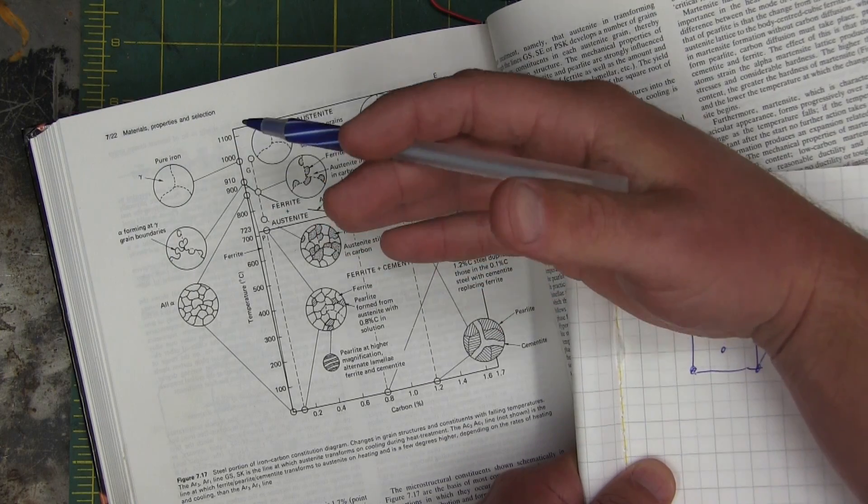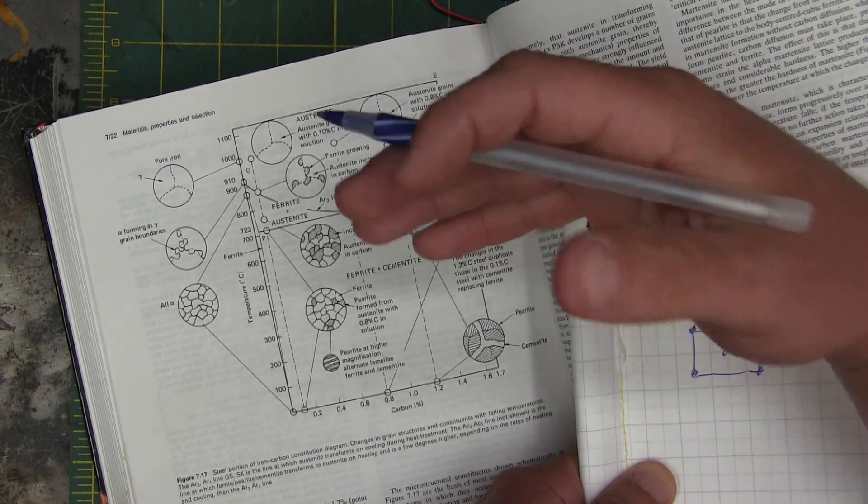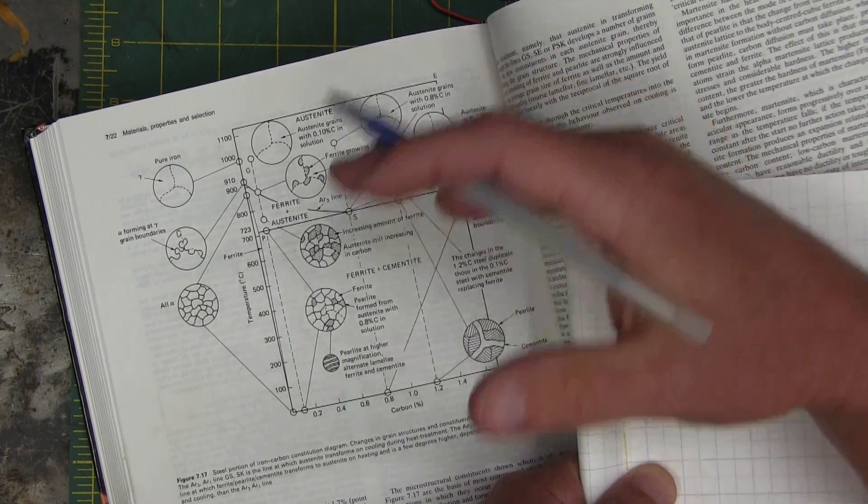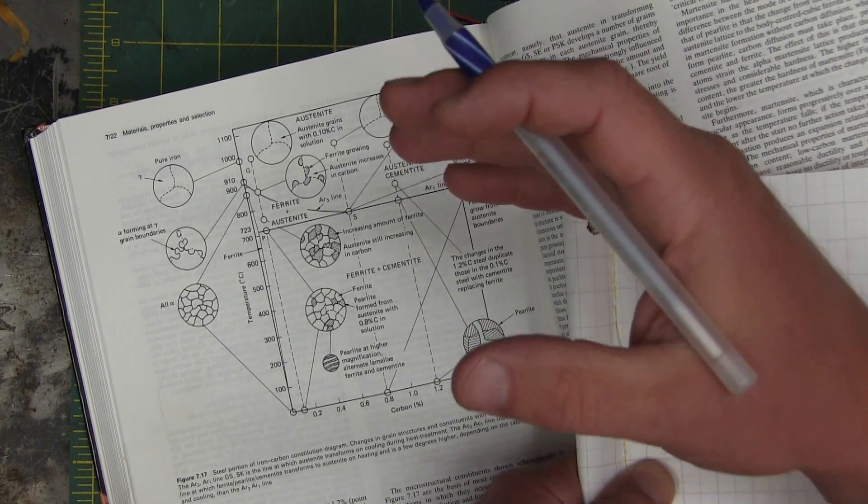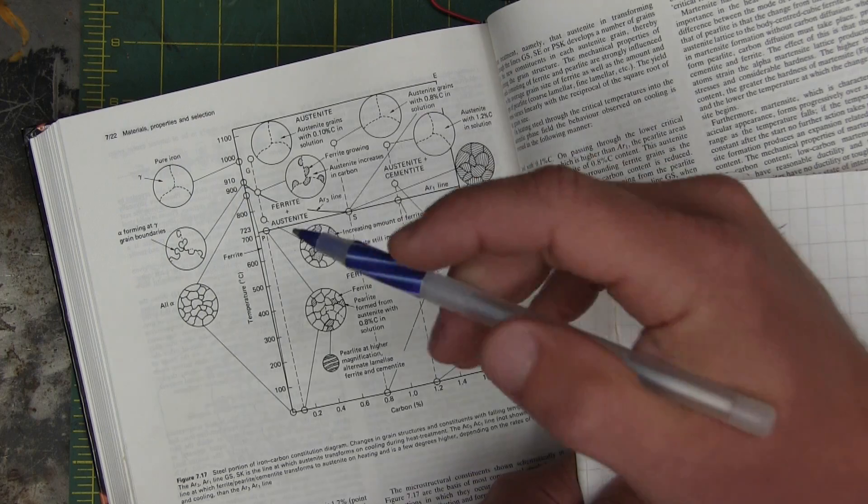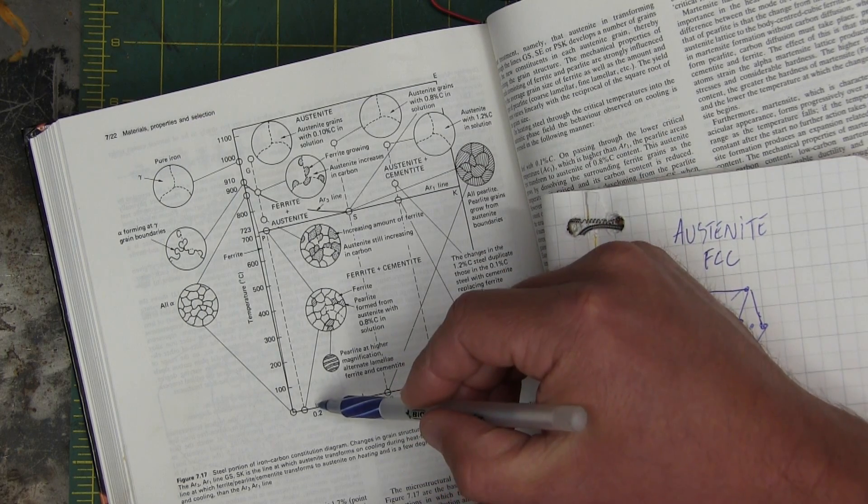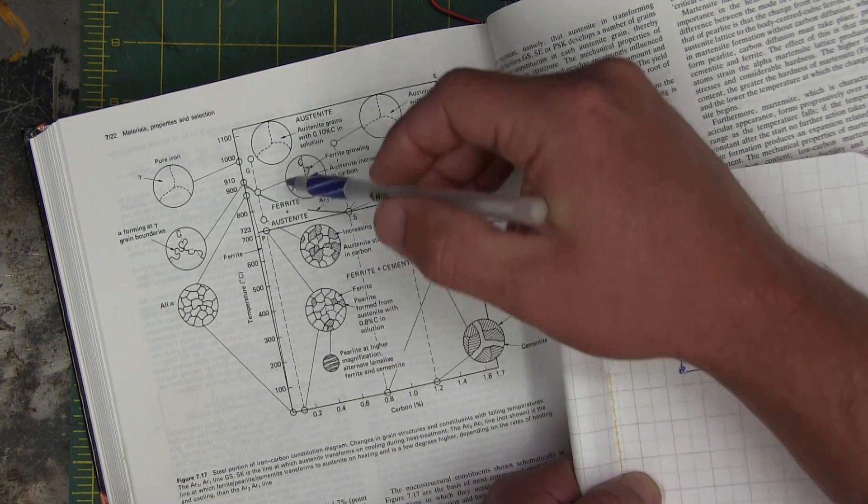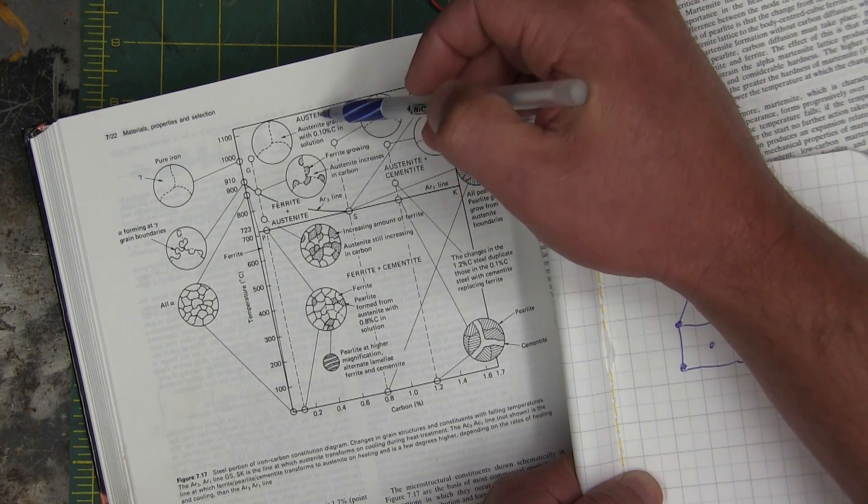We're gonna start with low carbon steel, mild steel. That's hollow structural steel tubing, that's the stuff we weld with every day. That is steel. When you think steel, this is the steel - low carbon. So we have less than 0.2% and that is called austenite.